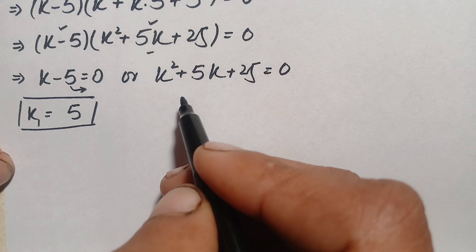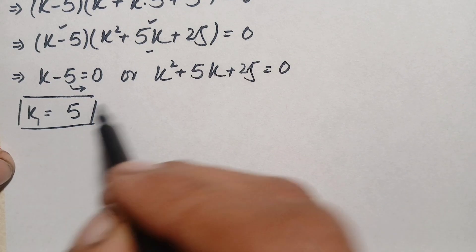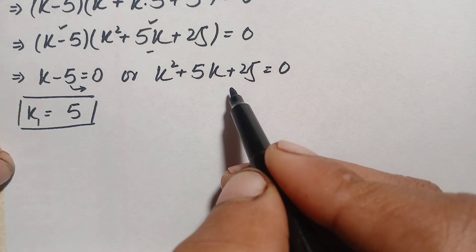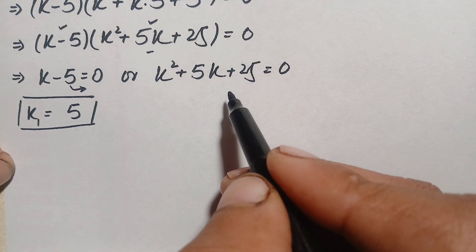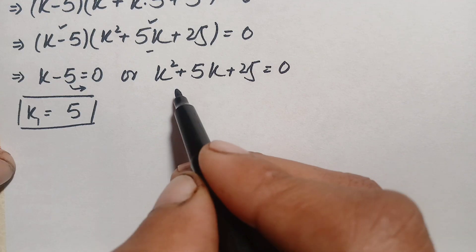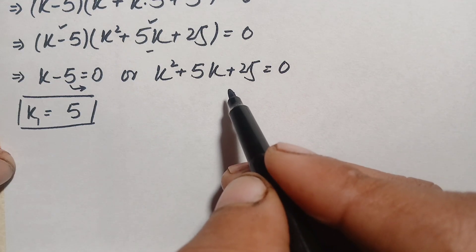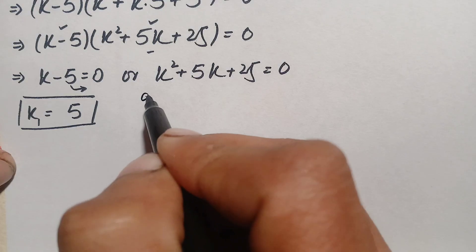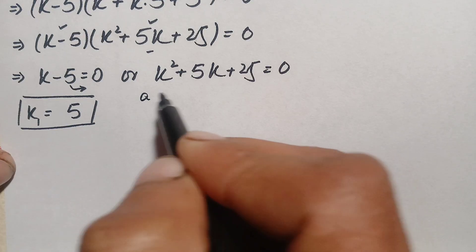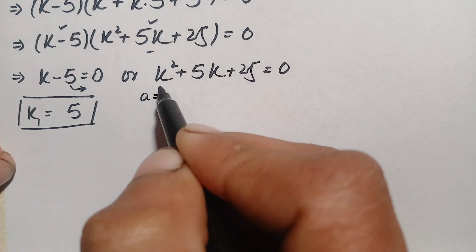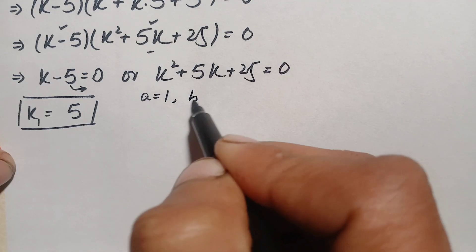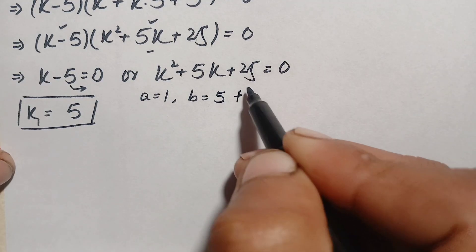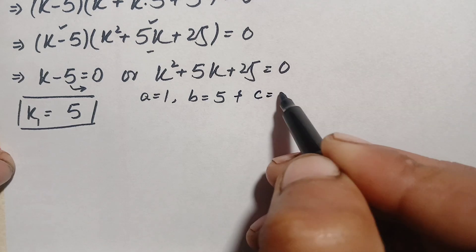Now we will solve the quadratic equation for the other two values of k. We cannot solve this by factorization or by completing the square, so we will use the quadratic formula. The value of a, the coefficient of k squared, is 1; the value of b, the coefficient of k, is 5; and the value of c, the constant term, is 25.